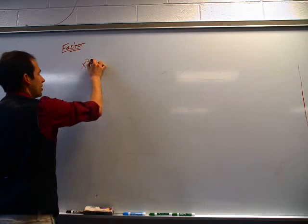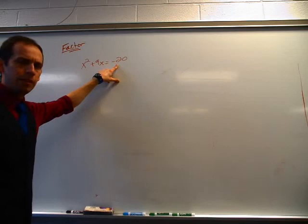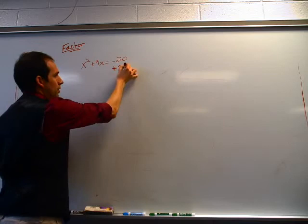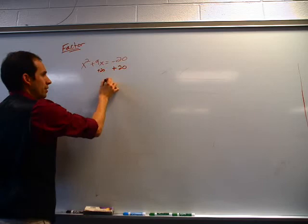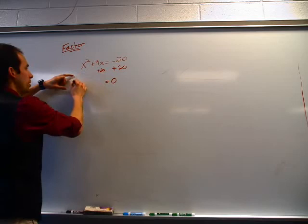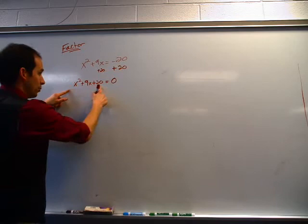Problem number 17 says x squared plus 9x equals negative 20. What's the problem with this? When you had to solve other problems, they were equal to zero. This one's equal to negative 20 — we need to fix that. So what we're going to do is move that negative 20 to the other side. Add the opposite: add 20 to both sides of my equation. So now negative 20 plus 20 equals zero — it takes care of my problem. On the left side, you can't combine 20 with x squared or 9x, so 20 just stands by itself. Now you have an expression that you can factor and solve.